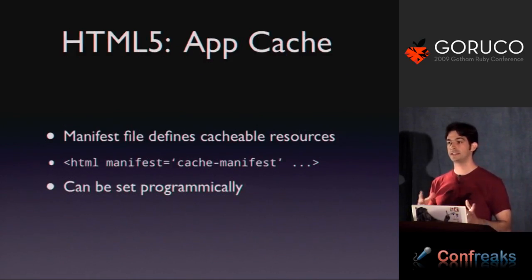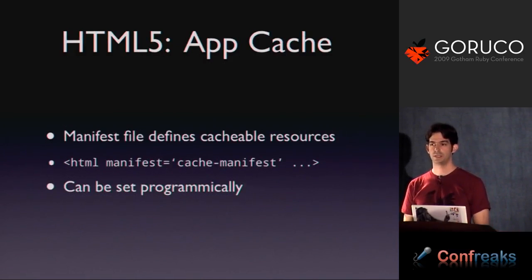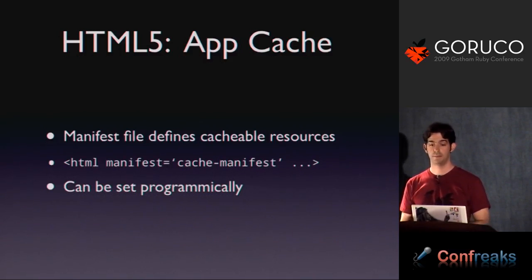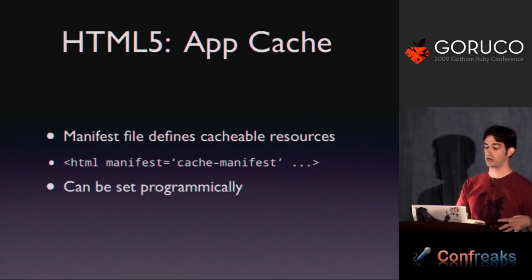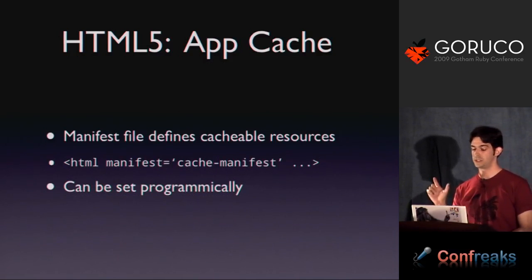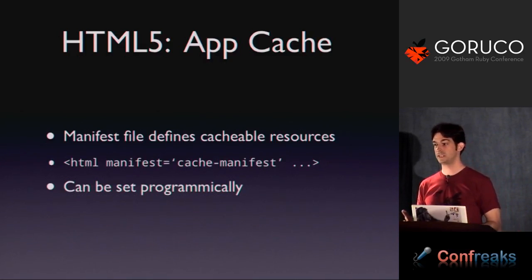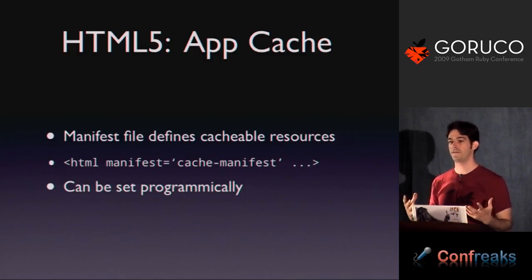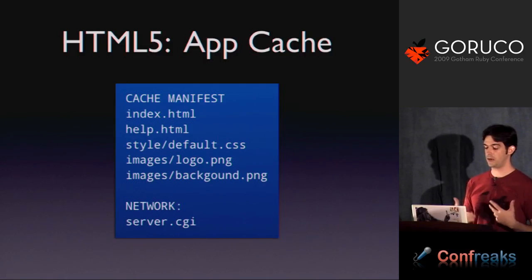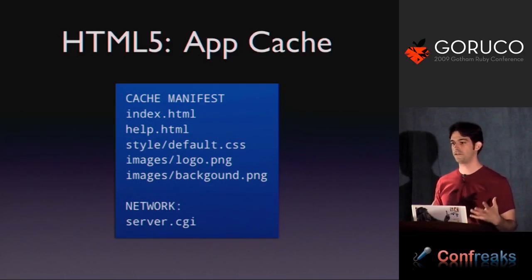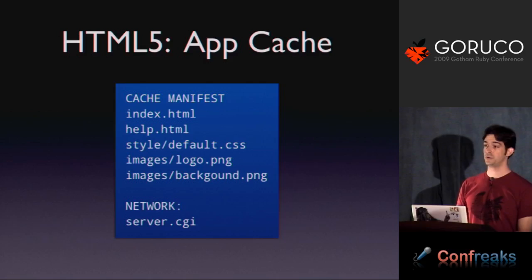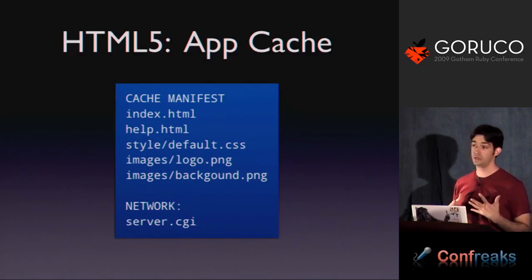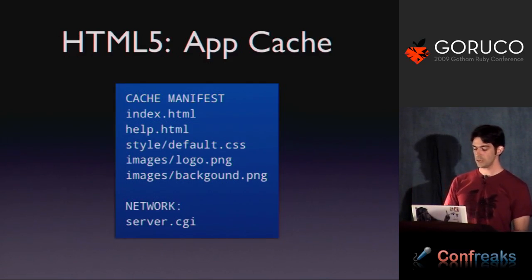App cache is the second type of client-side storage. It lets you define with a configuration file what parts of your application can be completely cached — served up completely off your browser's hard disk. There's a new manifest attribute on the HTML tag, pointing to a file that lists resources — HTML pages, images — that can be served directly from disk. This is much better than even a 304 not-modified response. The concept of an offline web app suddenly makes a lot of sense. You can also specify which resources should never be cached, like a server CGI script that always needs to go remote.